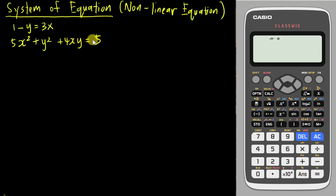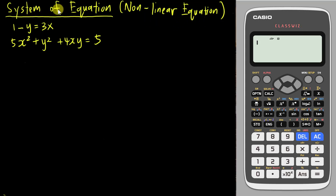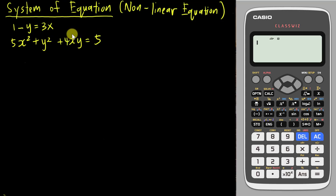This is another video sponsored by Casio Malaysia. In this video I will teach you how to use a new Casio 570EX to solve the nonlinear equation in the topic of the system of equations. Normally in this topic, the question will give you two types of equations — one will be the linear equation, and the second will be the quadratic equation which has x² and y² in it.